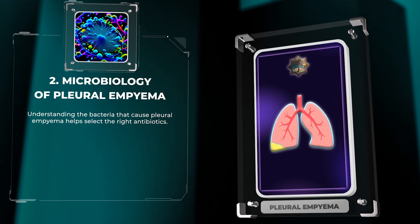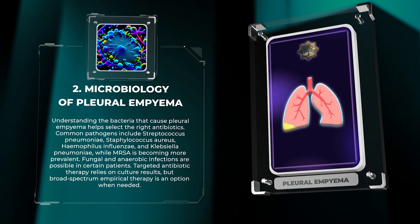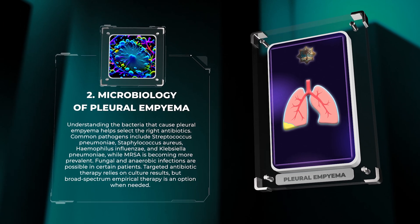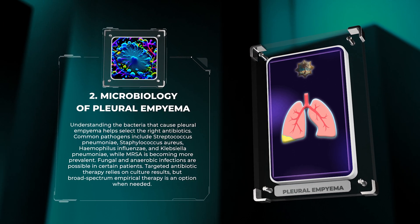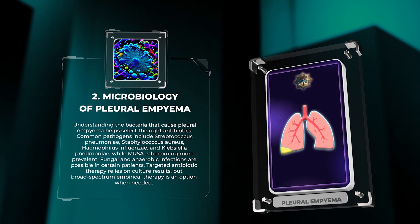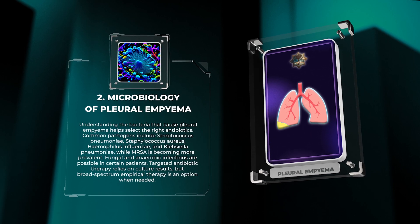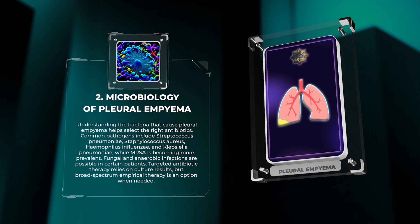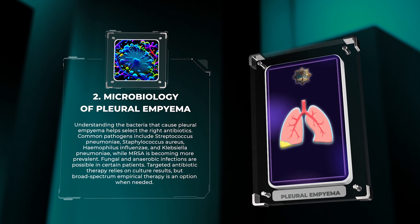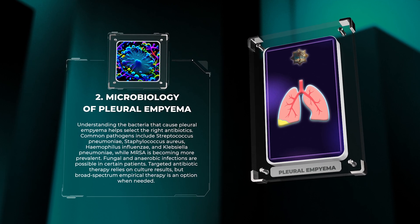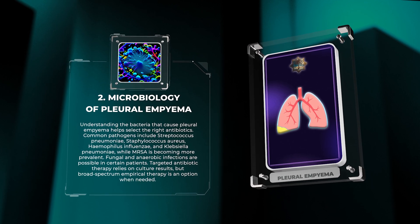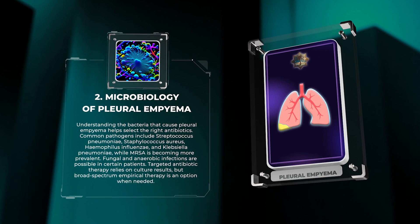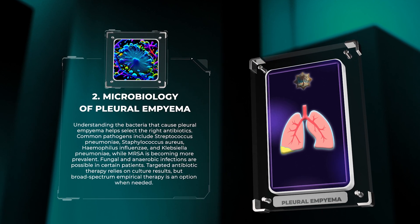Understanding the bacteria that cause pleural empyema helps select the right antibiotics. Common pathogens include Streptococcus pneumoniae, Staphylococcus aureus, Haemophilus influenzae, and Klebsiella pneumoniae, while MRSA is becoming more prevalent. Fungal and anaerobic infections are possible in certain patients. Targeted antibiotic therapy relies on culture results, but broad-spectrum empirical therapy is an option when needed.